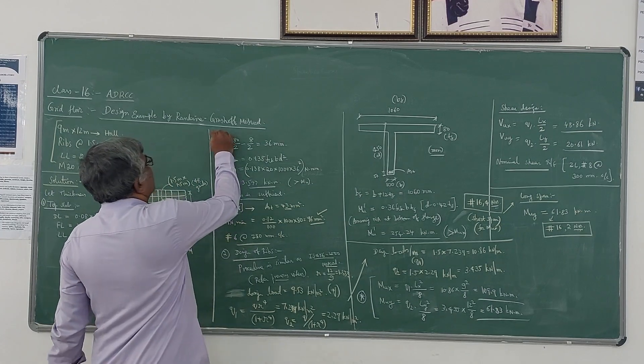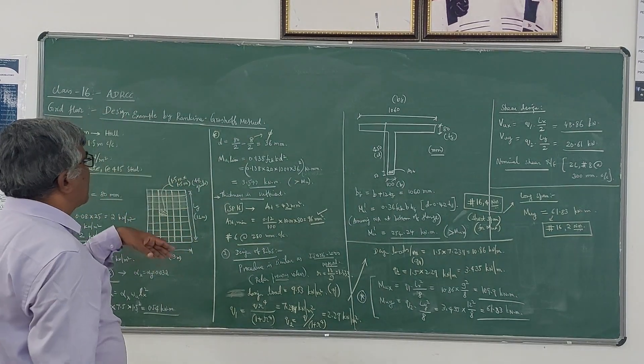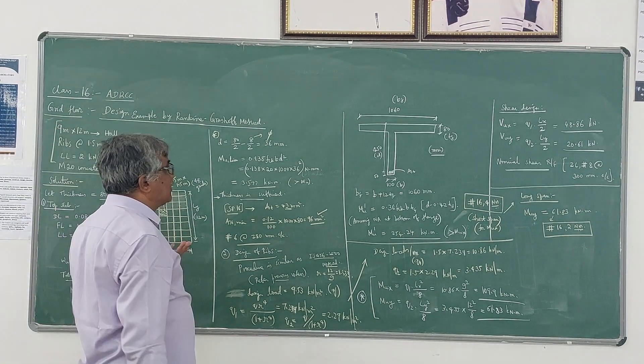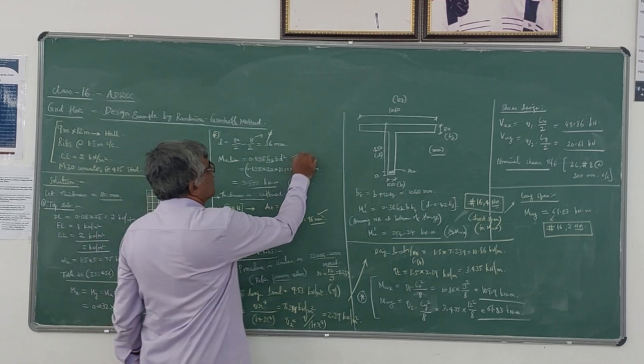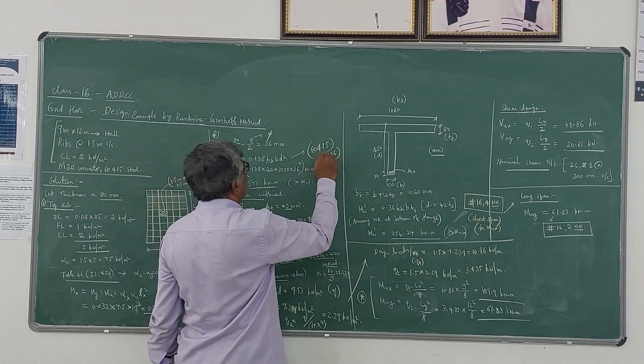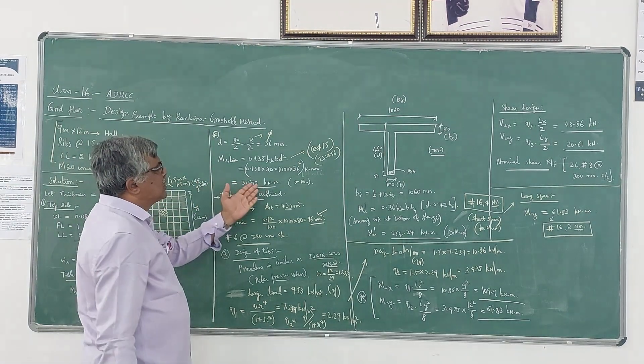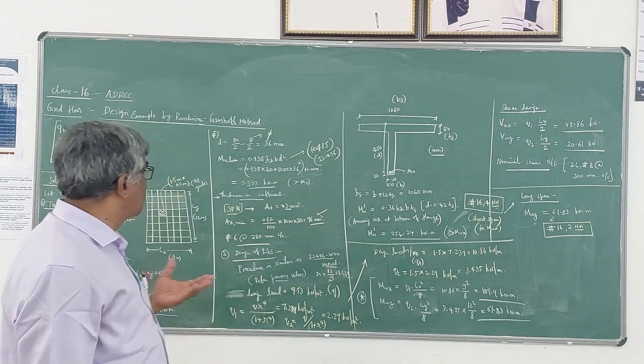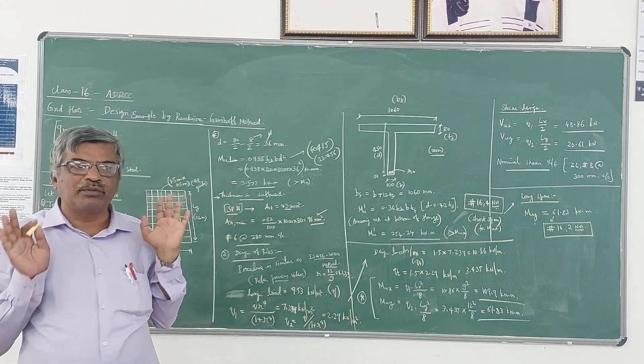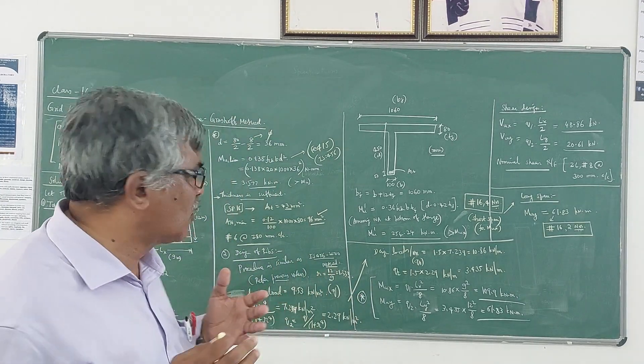The effective depth can be assumed as thickness divided by 2 minus the diameter of the bar. If you assume 6 mm bar diameter, d = 36 mm. You have to calculate Mu_lim, the limiting moment of resistance value. It is always calculated per meter width: 0.138 fck bd square. This coefficient 0.138 is for Fe415 steel - you can get this from IS456. Depending on the grade of steel, that coefficient will vary. If you substitute, you will get 3.577 kilonewton meter as Mu_lim. You can observe that this Mu_lim is greater than Mu1 (0.54), which means the thickness assumed is sufficient.